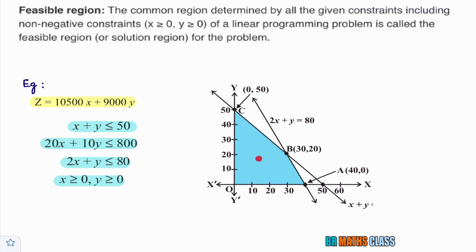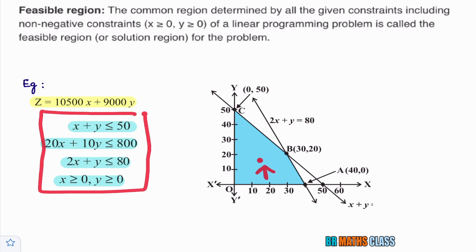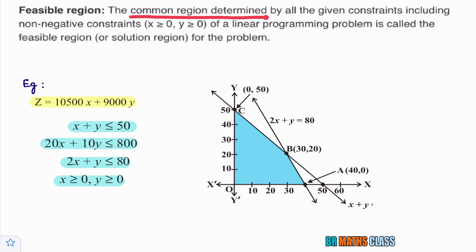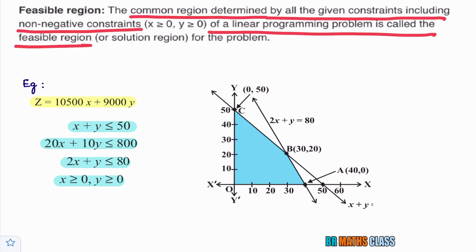That means, if you take one point in the feasible region, that point satisfies all the conditions — it satisfies all the constraints. So what is feasible region? It is the common region determined by all the given constraints, including non-negative constraints, of a linear programming problem. After doing one or two problems in this exercise, you'll get a clearer idea of what is feasible region.